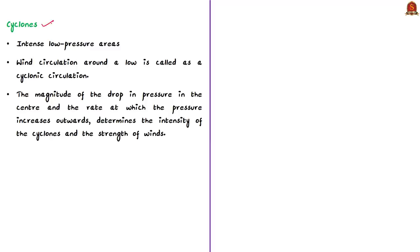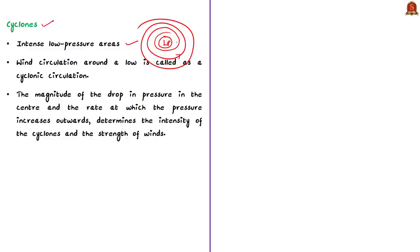Cyclones are intense low pressure areas and the wind circulation around a low pressure is called cyclonic circulation. From the center of such intense low pressure areas, the pressure increases outwards. The magnitude of the drop in pressure at the center and the rate at which the pressure increases outwards determines the intensity of the cyclone and the strength of the associated winds.